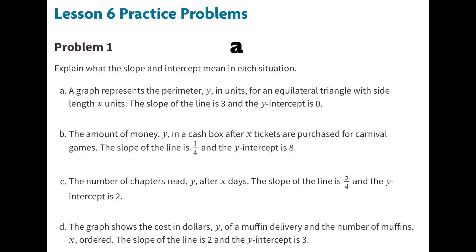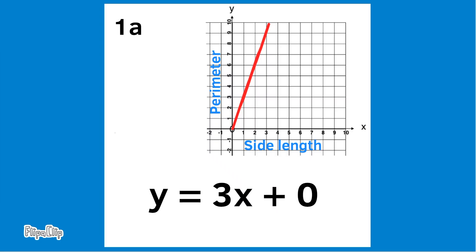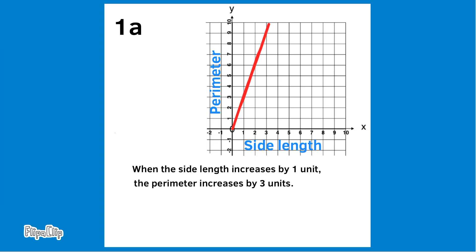Part A: A graph represents the perimeter y in units for an equilateral triangle with side length x units. The slope of the line is 3 and the y-intercept is 0. I wrote the equation y = 3x + 0 to represent this situation. The x-axis represents the side length and the y-axis represents the perimeter. When the side length increases by one unit, the perimeter increases by three units.